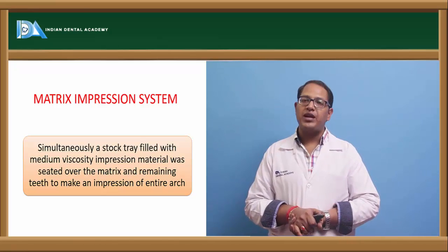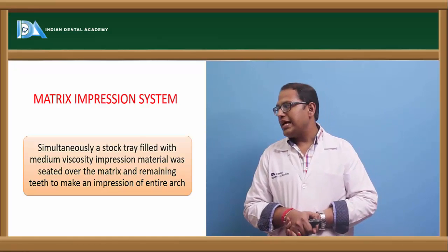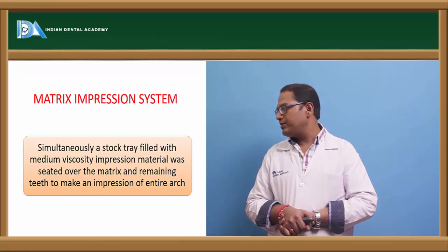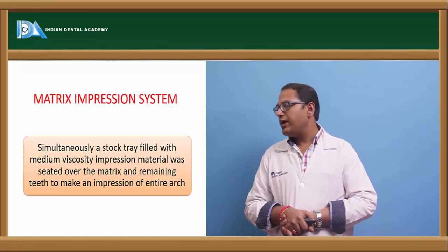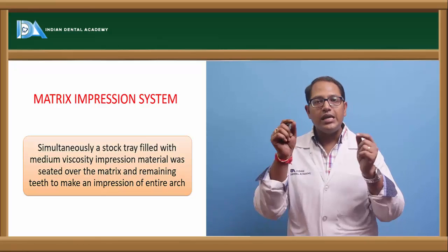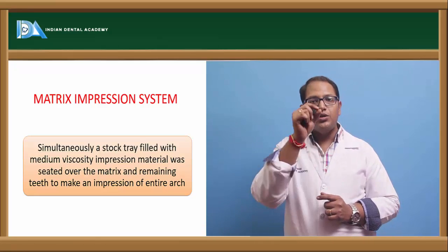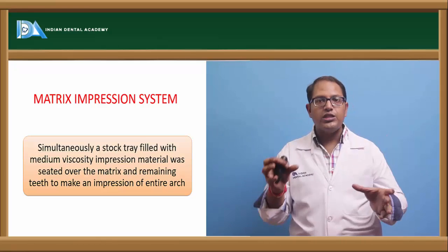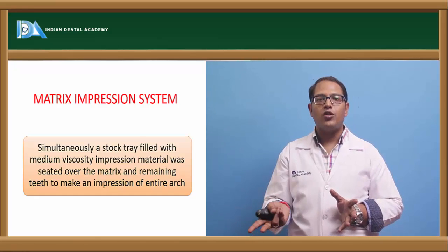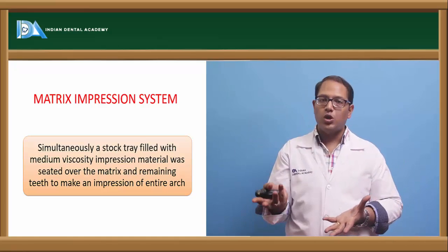The matrix impression technique works similarly to the copper band technique. A stock tray is filled with a medium viscosity impression material simultaneously over the matrix and remaining teeth to make an impression of the entire arch. You use a medium body material over the tooth surfaces like an inter-occlusal record material, place it over the prepared teeth area, and then make the stock tray impression. So you first create a matrix — a boundary — and then make the stock tray impression.